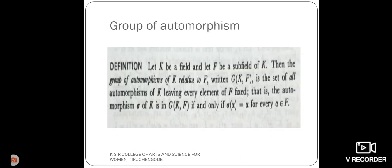Next one, the group of automorphisms. Here, K be the field and F be the subfield of K. Then, the group of automorphisms of K relative to F, we have to write G(K,F). G(K,F) is the set of all automorphisms of K.